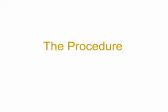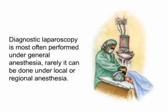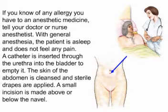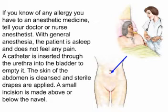The procedure. Diagnostic laparoscopy is most often performed under general anesthesia, though rarely it can be done under local or regional anesthesia. If you know of any allergy to an anesthetic medicine, tell your doctor or nurse anesthetist. With general anesthesia the patient is asleep and does not feel any pain. A catheter is inserted through the urethra into the bladder to empty it, and the skin of the abdomen is cleansed and sterile drapes are applied.